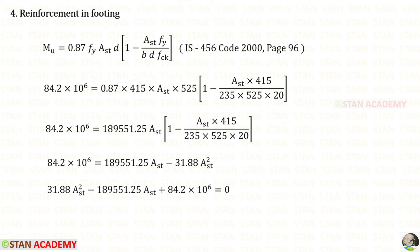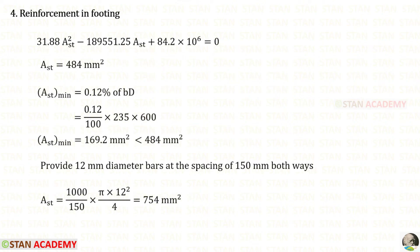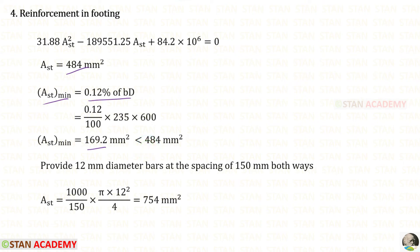Now we assign the reinforcement in the footing. From the code book formula, we derive an equation and solve it using a calculator. For AST we get 484 mm². Using the minimum AST formula, we get 169.2 mm². Our AST of 484 mm² is greater than the minimum, so we proceed with this value.